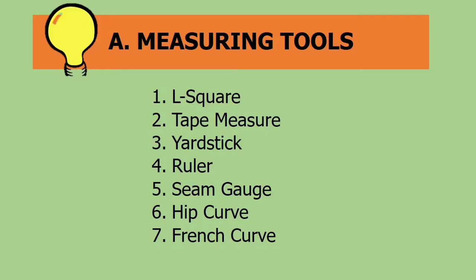We have 7 measuring tools to be enumerated, and they are as follows: 1, L-square; 2, tape measure; 3, yardstick; 4, ruler; 5, seam gauge; 6, hip curve; 7, French curve.